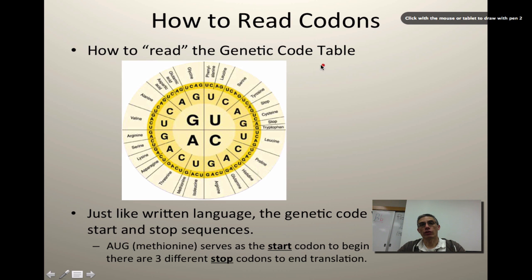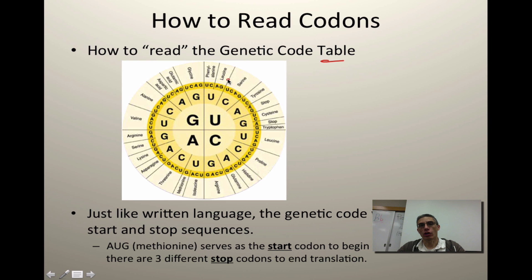In this genetic code table, on the outside of the table we have all the different amino acids that might be used to create a protein. There are 20 different amino acids that may or may not be used to create that protein, and all 20 are going to be on the outside. If you notice, there are lots of letters on the inside, and each of those letters represents the nitrogen bases that you might find in that strand of messenger RNA. The way you would read the table is simply to start on the inside and work your way out.